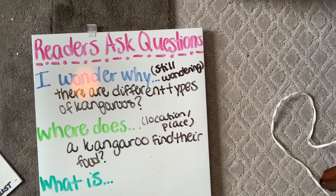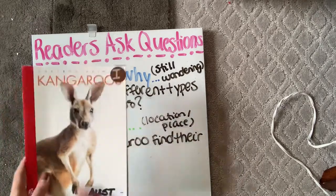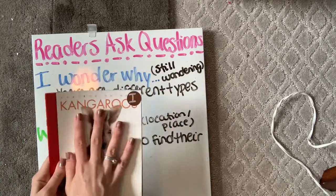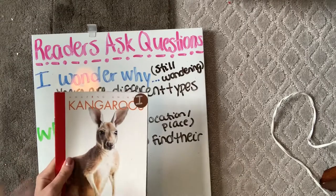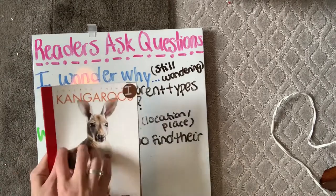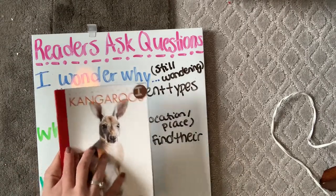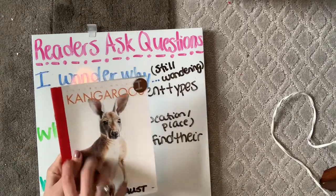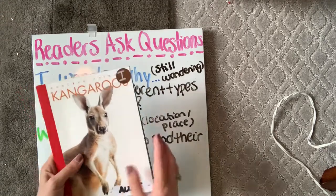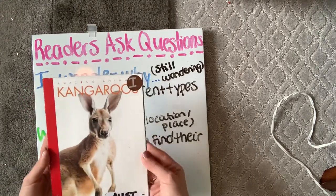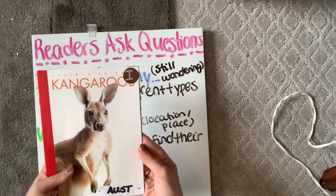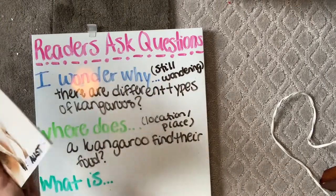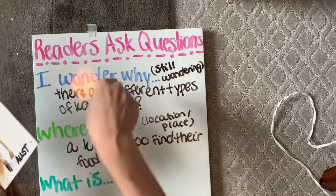So 'where does' deals with location and place. The book tells us they live in Australia and that they eat shrubs and plants, but where exactly do they find this food? What kind of habitat? Do they find it in the desert? Do they find it in the rainforest? That's what I want to know — they haven't told me in the book. So again, my question is taking it a step further.